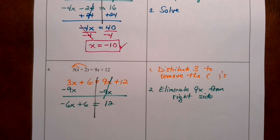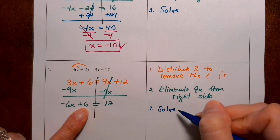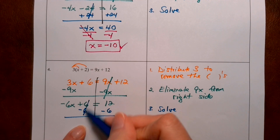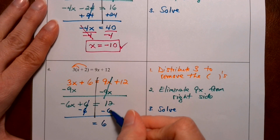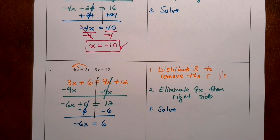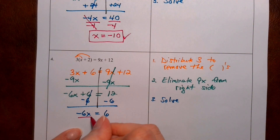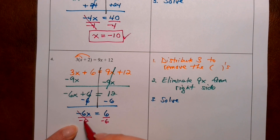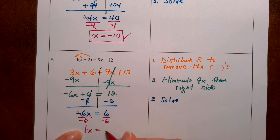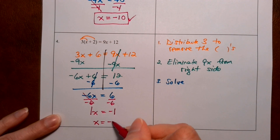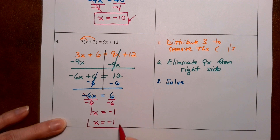Now we're going to solve like usual. We subtract 6 from the left and from the right — the numbers get eliminated from the left and all the numbers are on the right. If your equation is getting smaller and smaller, it's working. The last step: the inverse of multiply is to divide by negative 6. Negatives cancel, 6's cancel — that makes 1. A positive divided by a negative is negative 1, so x equals negative 1.